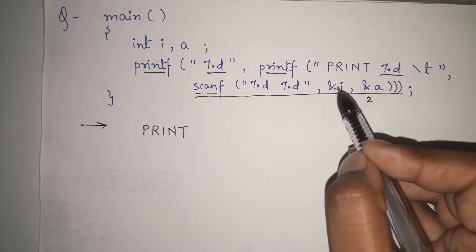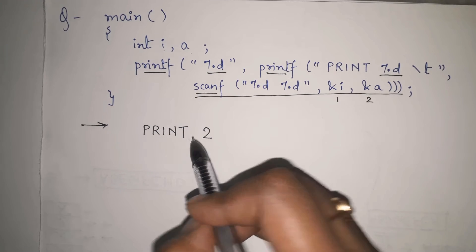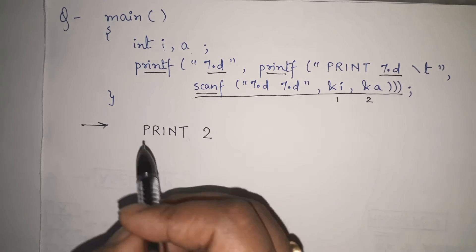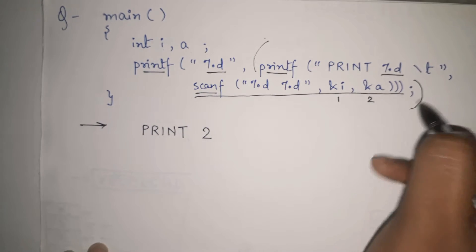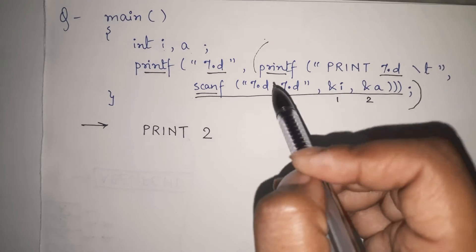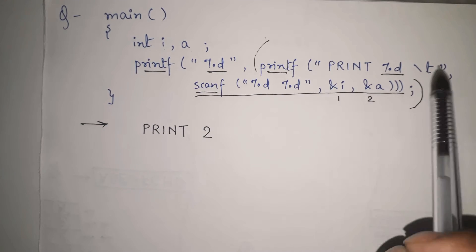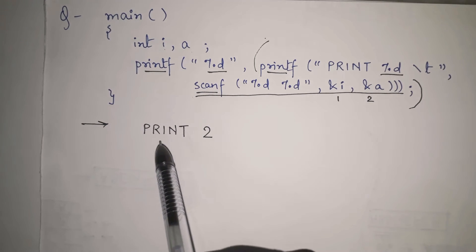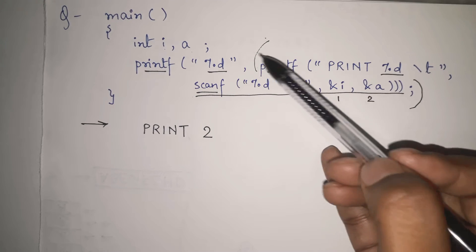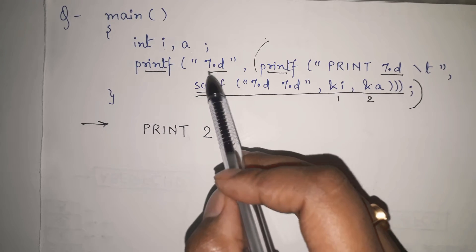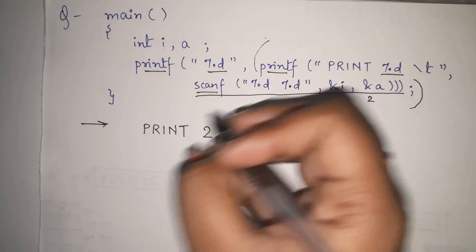So this %d will print 2 — because i and a are the two integers being scanned, giving a count of 1 and 2. The string 'print' and a space are printed as-is, then in place of %d, the value 2 comes. So from the inner printf and scanf together we get 'print 2'. Now what remains is the outer printf: it prints one integer via %d and inside it we have already evaluated 'print 2'.